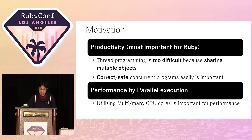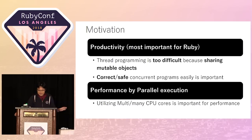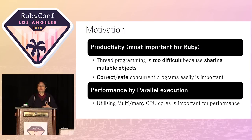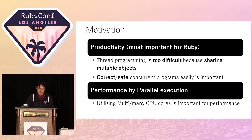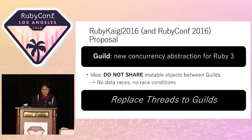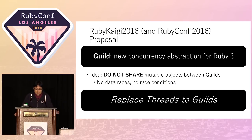I want to introduce a convenient way to utilize multiple cores. To achieve these goals, I've proposed Guild — a new concurrent abstraction — at RubyConf 2016, two years ago. This idea is very simple.